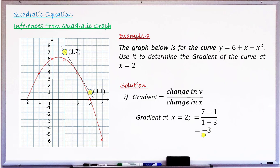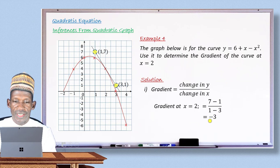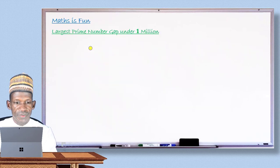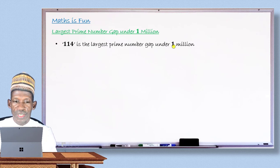These are just samples of questions you can be asked to find from the graph of a quadratic or linear equation. This is the end of this lesson. I hope you enjoyed it. Now let me move to the last segment, where I promised to give you the largest prime gap between any two consecutive prime numbers less than 1 million — and the answer is 114.